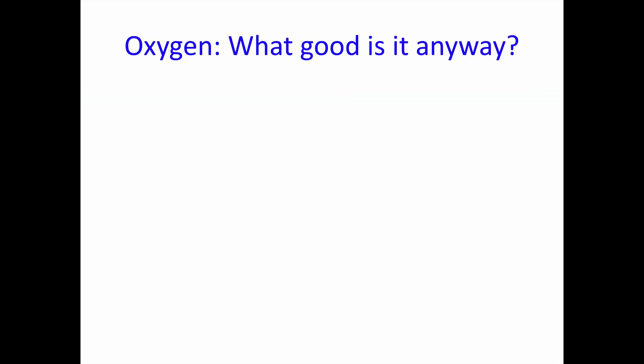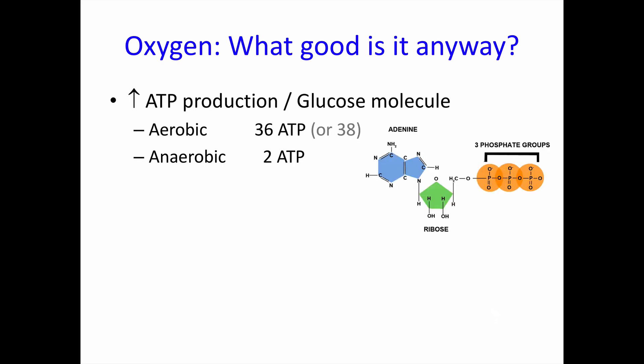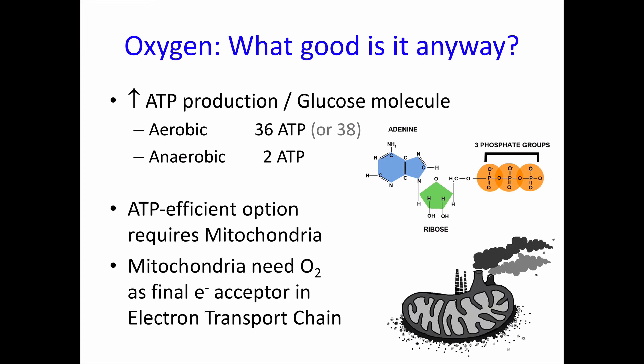Oxygen — why do we need it? If we look at how many molecules of ATP are generated per molecule of glucose consumed, there's a huge difference between aerobic and anaerobic metabolism. The theoretical maximum is either 36 or 38 ATP per glucose, depending on whether it's a eukaryotic or prokaryotic organism. Either way, that's many times more ATP than you get from anaerobic metabolism. The ATP-efficient aerobic option in eukaryotes, such as humans, requires the use of mitochondria, and mitochondria require oxygen as the final electron acceptor in the electron transport chain.